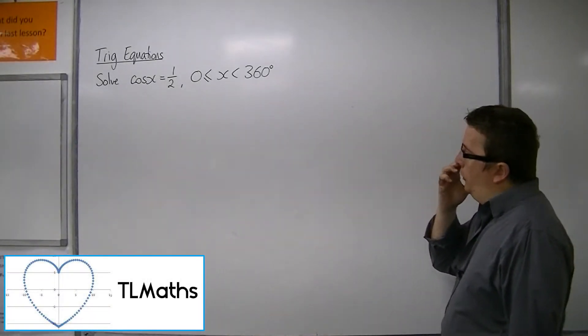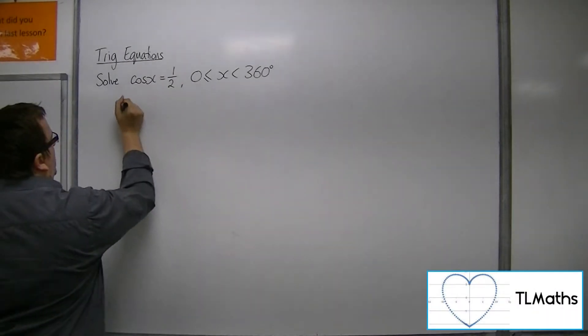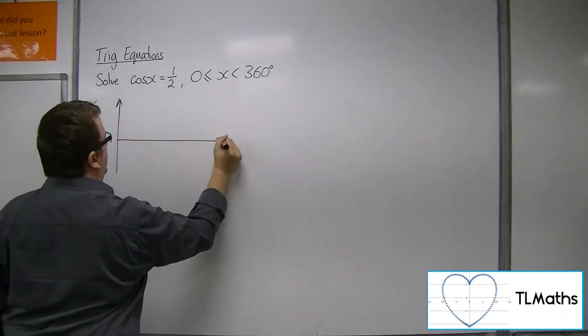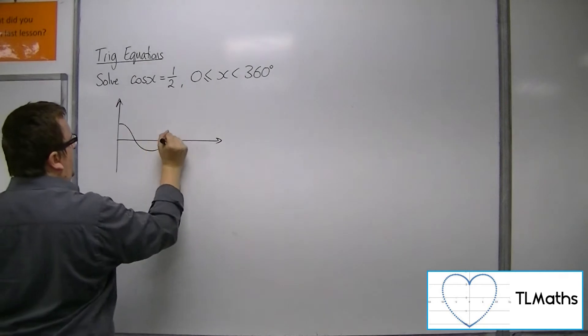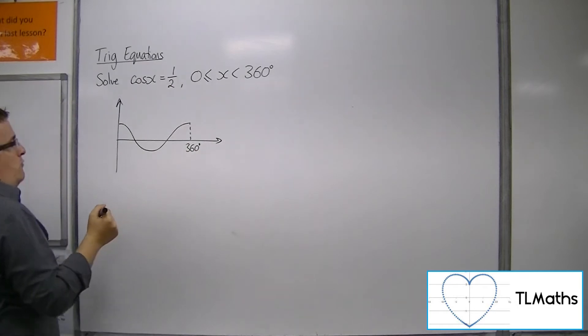So now let's try and solve cos x equals a half. We first of all sketch cosine. You're going to get very good at sketching the trig curves. You've got to get good at it just through general practice.